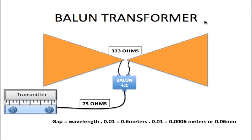Now we'll discuss the balun transformer. Even if your coaxial cable and antenna impedance were matched — say both 75 ohms — you still couldn't connect the coaxial cable directly to the antenna, because coaxial cable is an unbalanced medium while the Bowtie Antenna is balanced. In that case you'd need a 1:1 balun. But in this case the antenna's impedance is approximately four times higher than the coaxial cable, so I recommend using a 4:1 balun for this antenna.